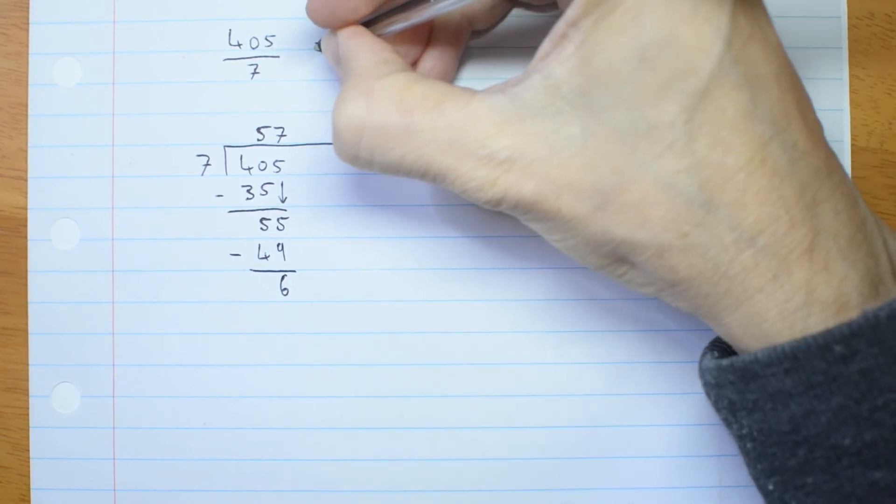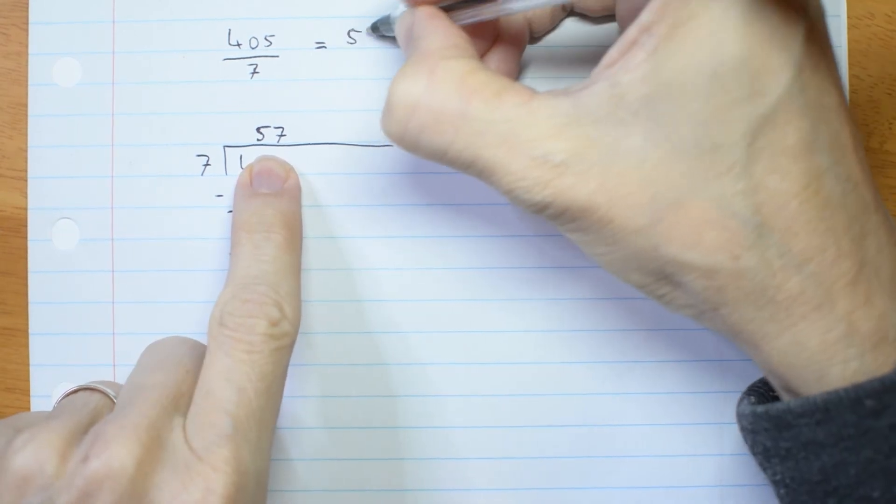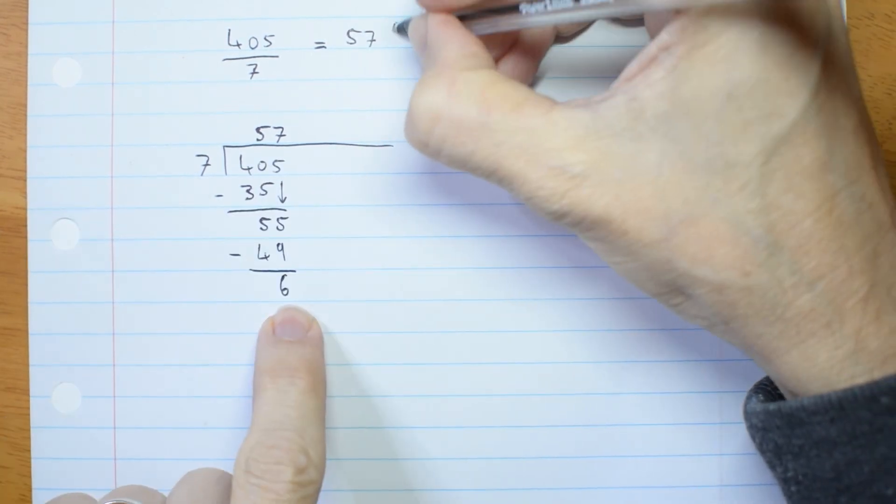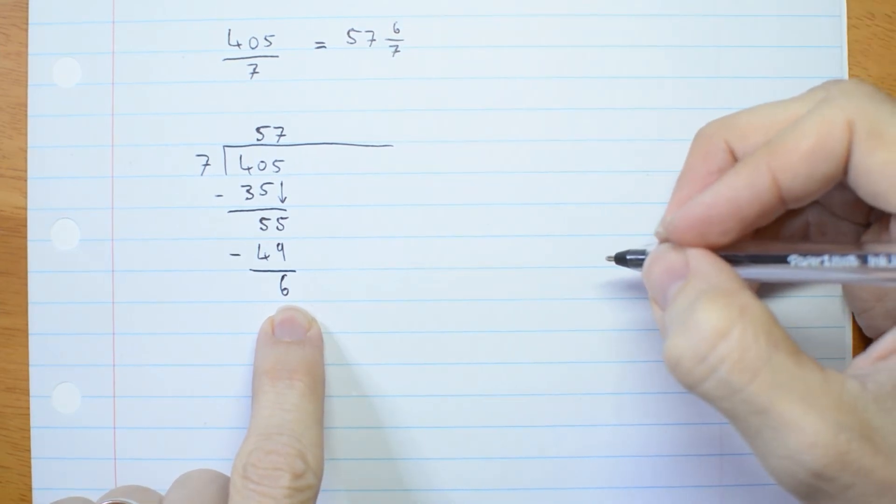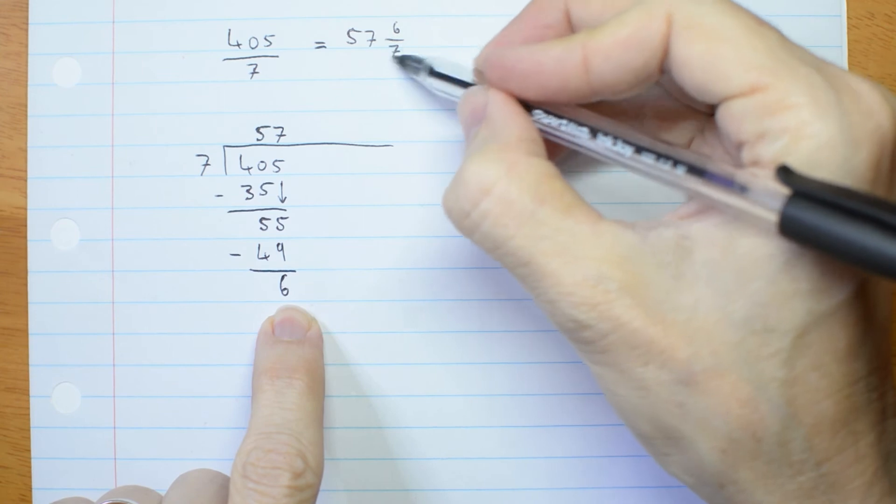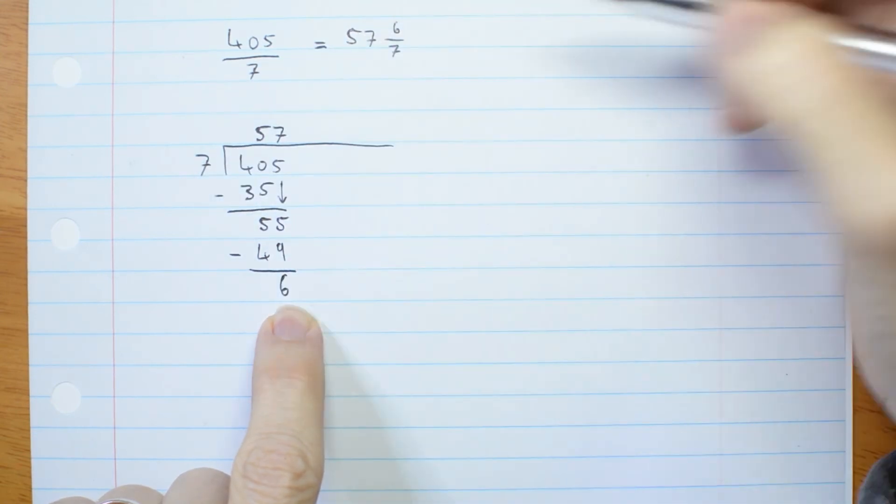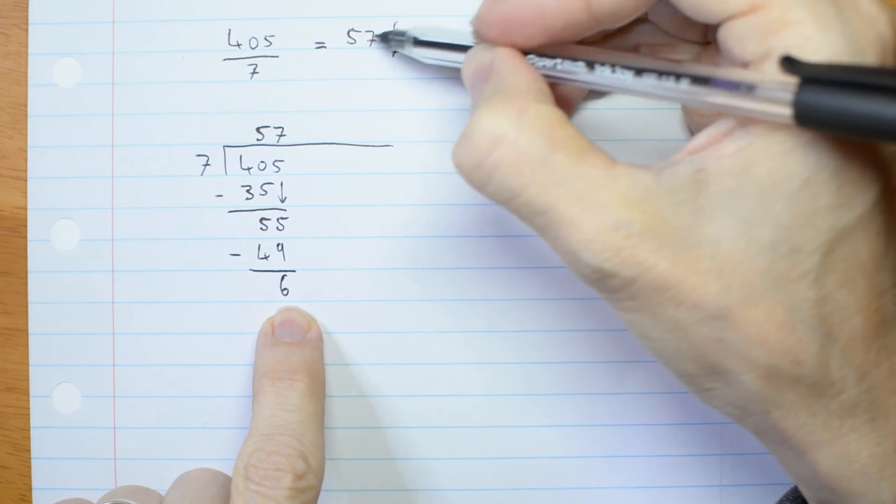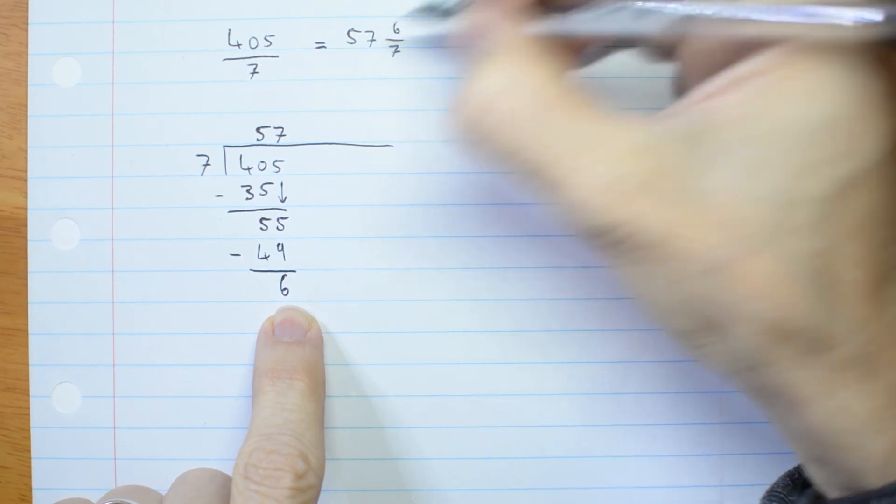So I'm going to go 405 divided by 7 is equal to 57 and 6 sevenths. The divisor here is the same as the divisor here. Now, this, of course, would be a plus. Okay? So if I'm doing my polynomials, I'm going to have my quotient plus my remainder.